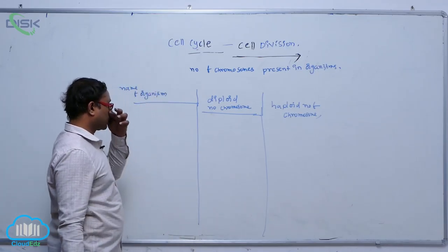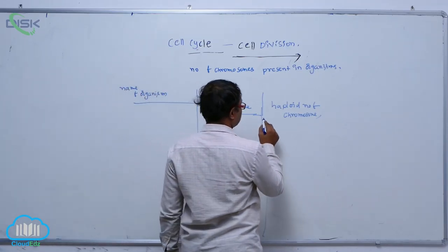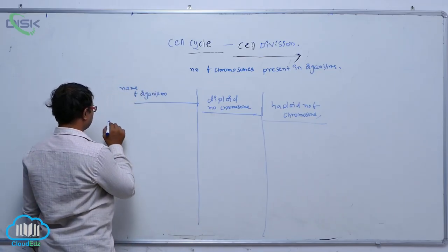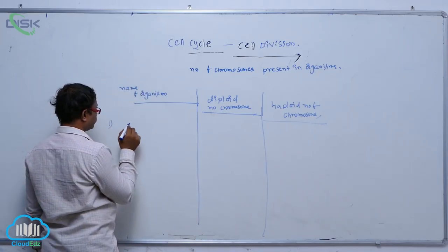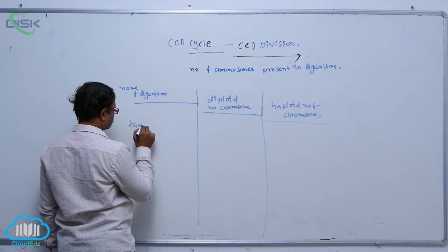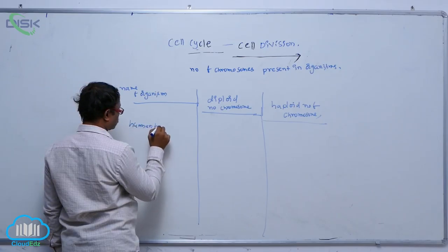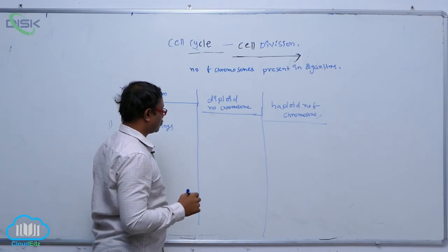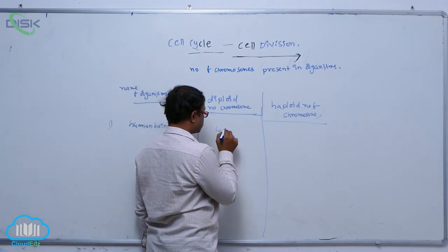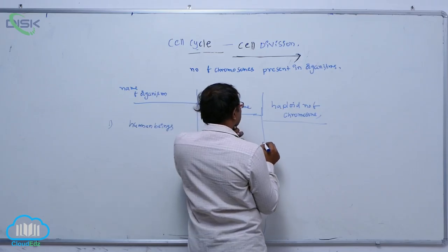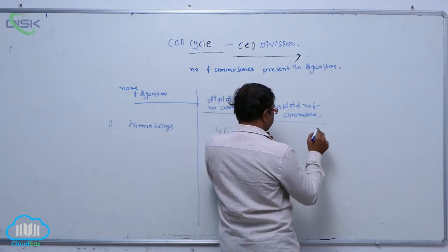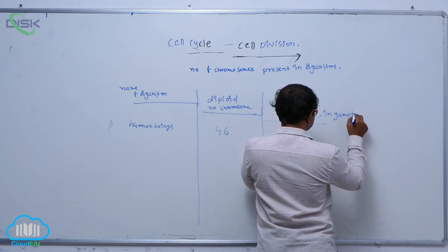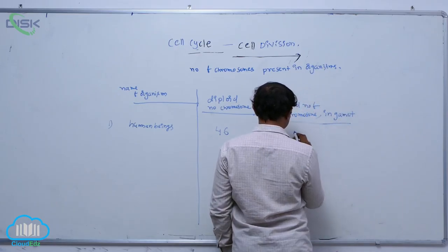Take a human being. The diploid number of chromosomes is 46. The haploid number of chromosomes in the gamete is 23.